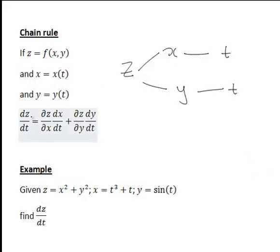It can be shown that the full derivative of z with respect to t, dz/dt, is the partial derivative of z with respect to x times the full derivative of x with respect to t, plus the partial derivative of z with respect to y times the full derivative of y with respect to t.